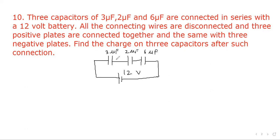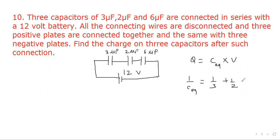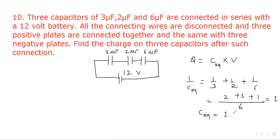The charge on each capacitor will be the same. Let's find out the charge. Q equals C equivalent times V. Here 1 upon C equivalent will be equal to 1 upon 3 plus 1 upon 2 plus 1 upon 6. That gives 2 plus 3 plus 1 over 6, which equals 1. So C equivalent will be 1 microfarad.